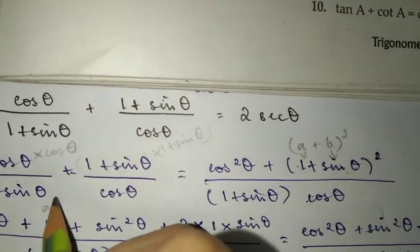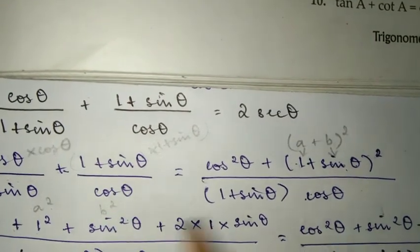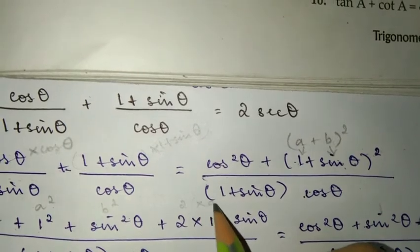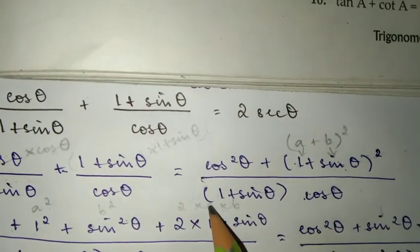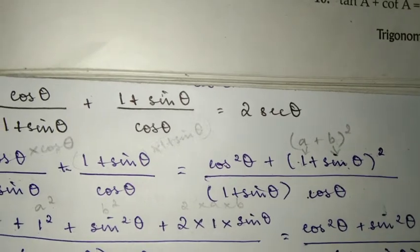So we have cos squared, then a squared which is 1 squared, plus b squared which is sin squared theta, plus 2 times a times b. Here a is 1 and b is sin theta, so 2ab becomes 2 sin theta.